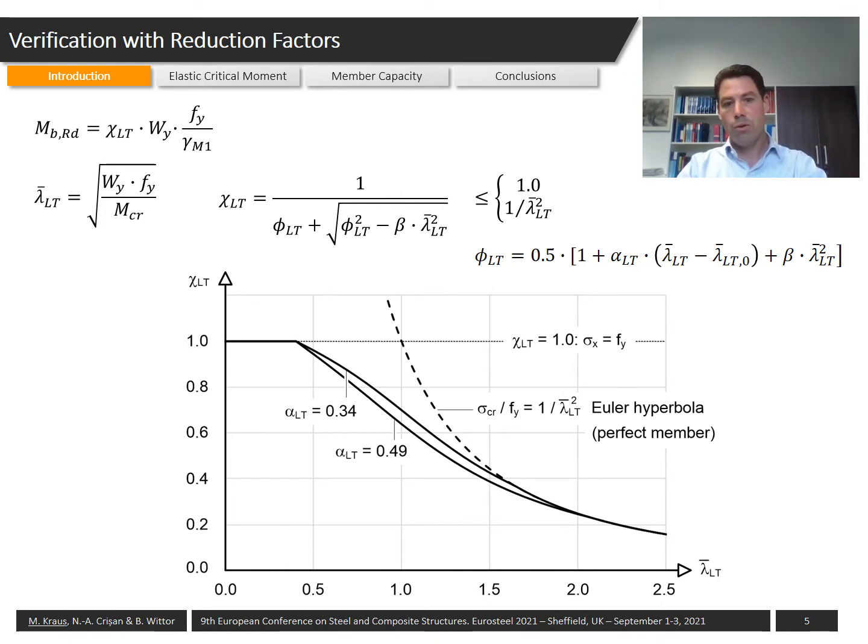On the lower figure you can see the reduction factor χLT for I cross-sectional profiles defined in Eurocode 3. You see that it depends on the non-dimensional slenderness of a member, and that non-dimensional slenderness is defined as the root of the cross-sectional capacity over the elastic critical moment of the system.